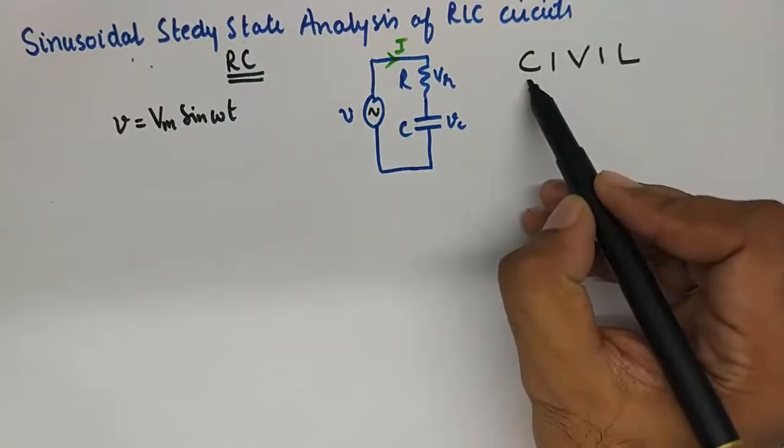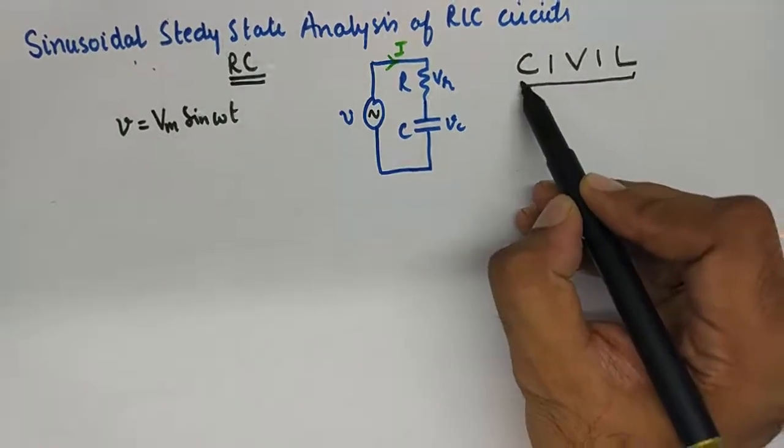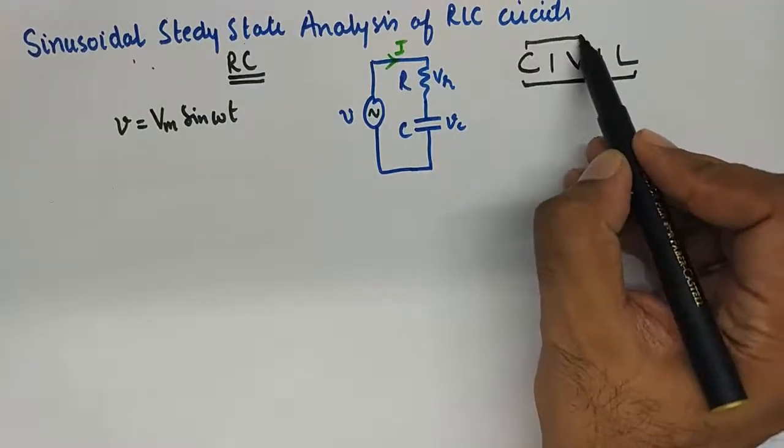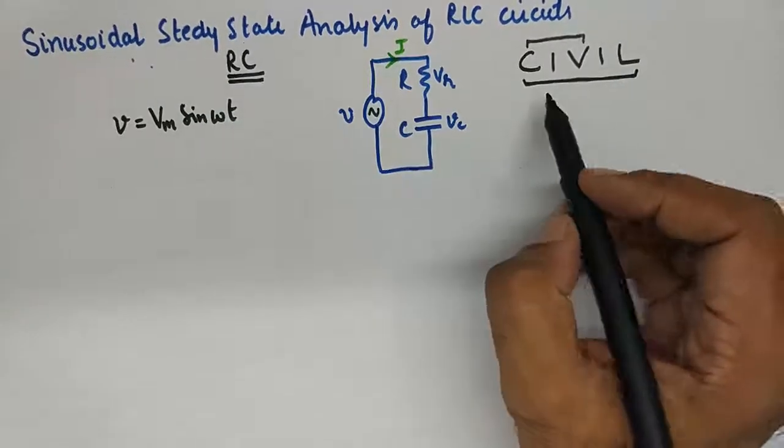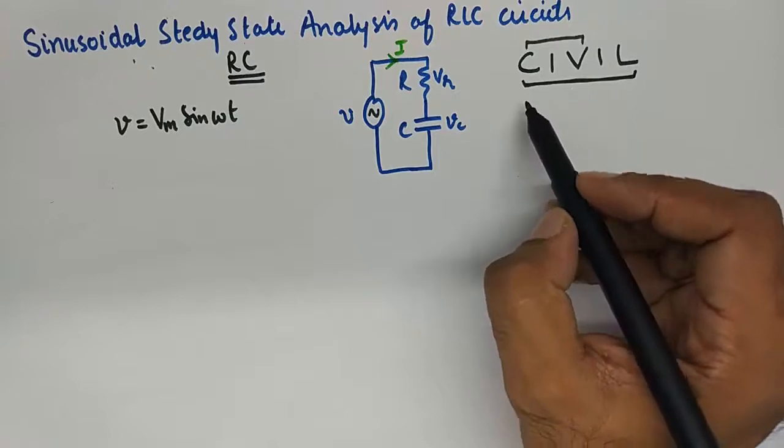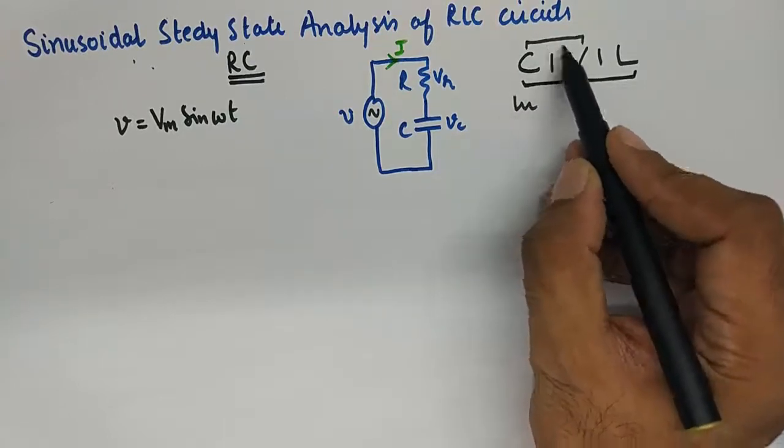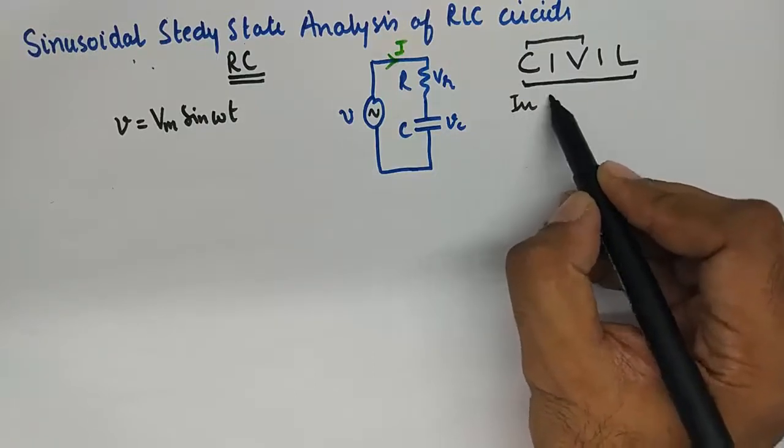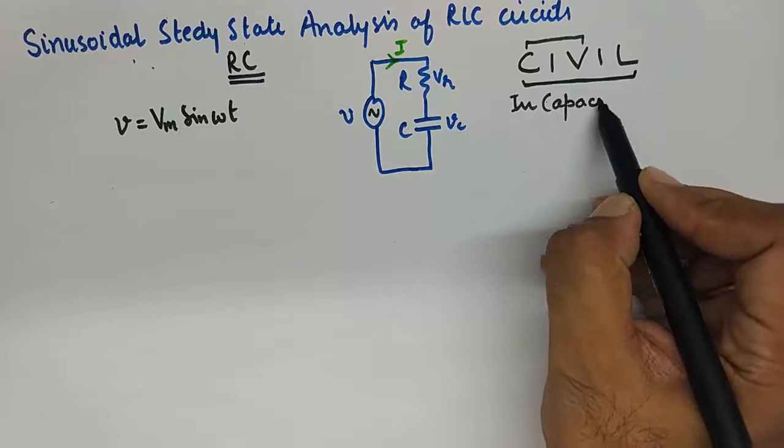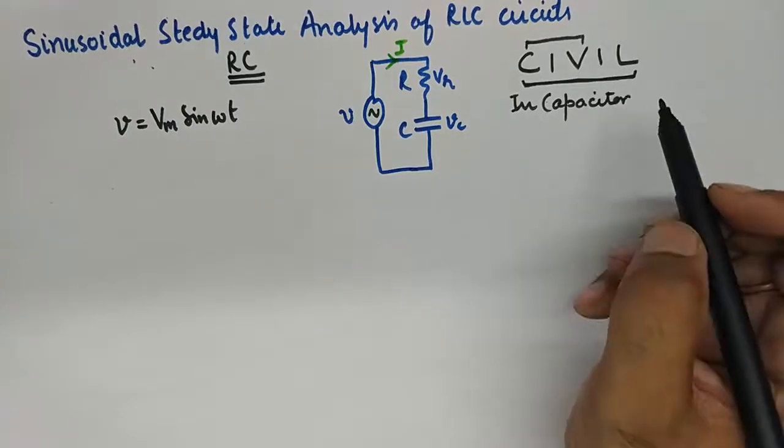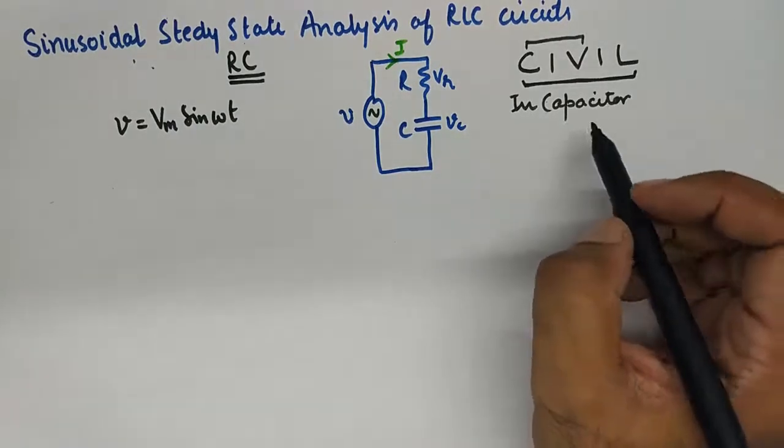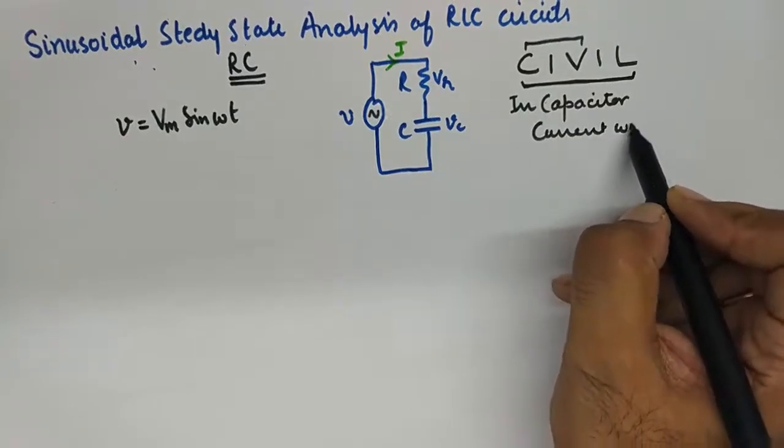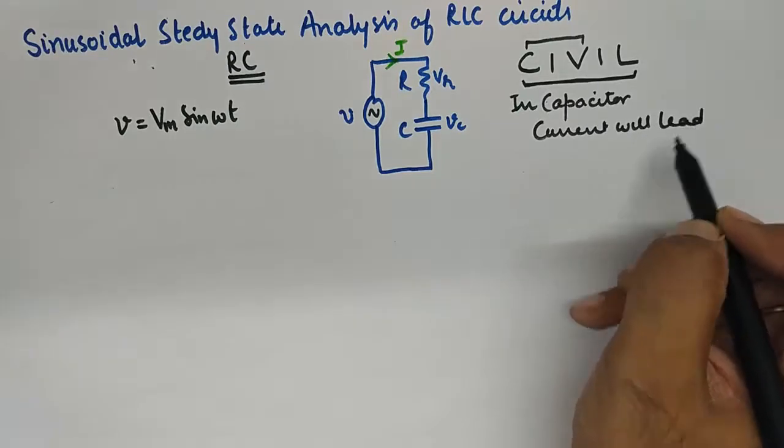Now that hint is, you could remember this word CIVIL, where the first three letters of the word would represent that in CIV, the first three letters will represent or will help you remember that in capacitor current will lead voltage.